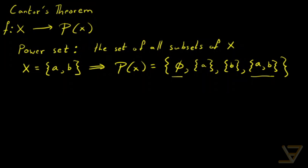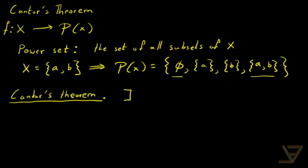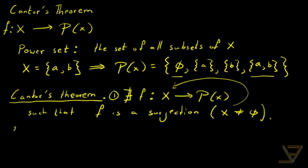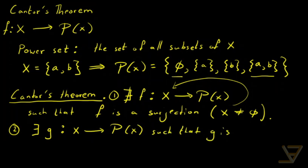And what Cantor's theorem says is the following. First, there does not exist a function that goes from x to the power set of x such that f is a surjection — assuming that x is not equal to the empty set itself. And secondly — and the second part is much easier to prove — there does exist a function, let's call it g, going from x to the power set of x, such that g is an injection.